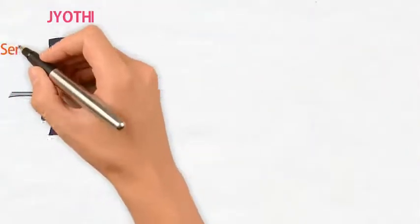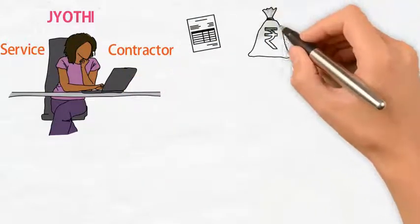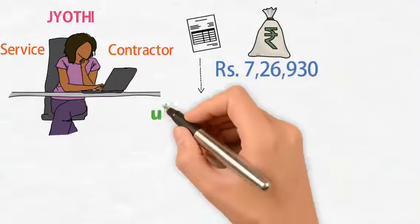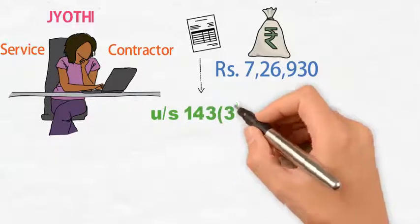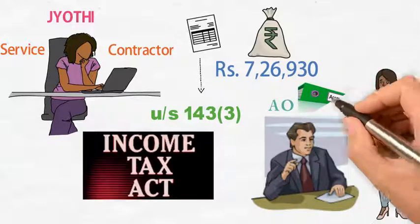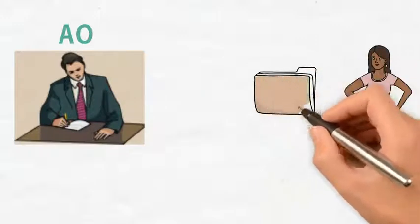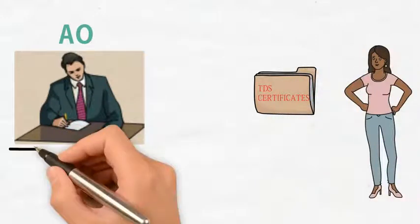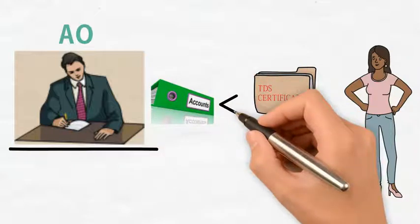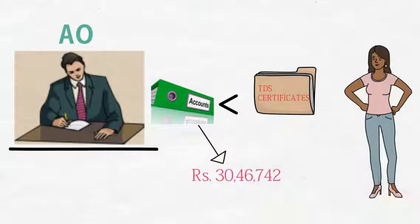Jyoti was engaged in the business of a service contractor. She filed her return declaring income of Rs. 7,26,930. During assessment proceedings under Section 143 of the IT Act, the AO asked Jyoti to produce her books of account and other details. The AO compared Jyoti's business receipts with those mentioned in the TDS certificates and found that the receipts in the books were less by Rs. 30,46,742.